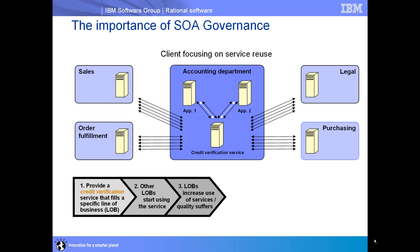Over time, the other lines of business begin to increase their usage of this service, putting a lot of pressure on it. The quality of that service begins to suffer — its performance and availability become at risk — and the departments depending on it feel the pain as their applications slow down or become unreliable.